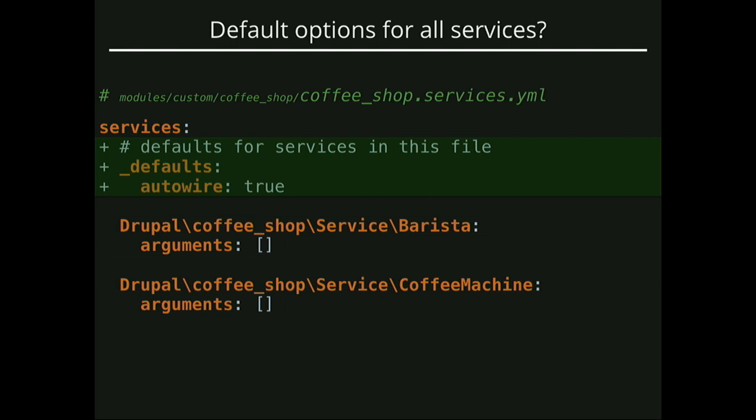So how could we just say: when I register services, make them all auto-wire without me needing to say autowire: true for each one? You actually can do that by adding the magic _defaults key. This is a new feature coming from Symfony — _defaults is a magic service ID, a specific magic string, and any configuration you put under _defaults is going to apply to every service in this file. It's a great global/local configuration — it won't modify services coming from core or contrib, only what you have in this file.